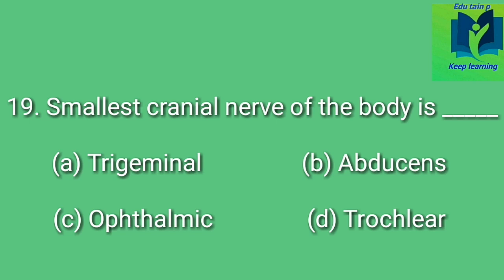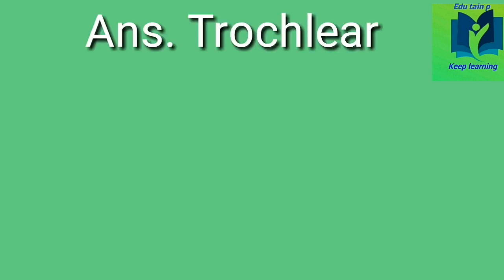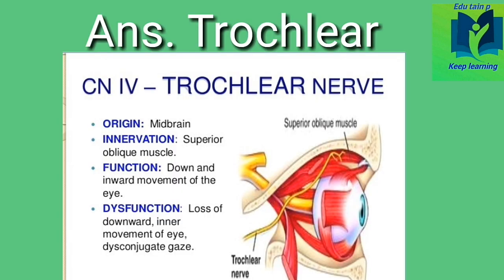The smallest cranial nerve of the body is dash. Option A: trigeminal. Option B: abducens. Option C: ophthalmic. Option D: trochlear. Answer: trochlear.